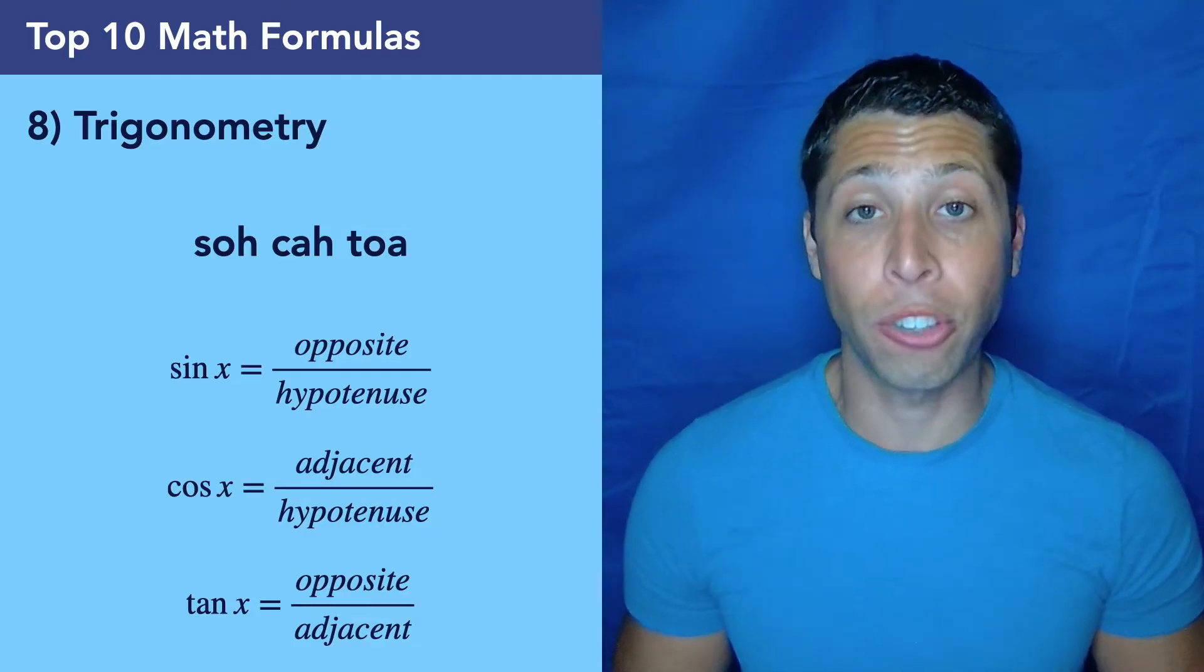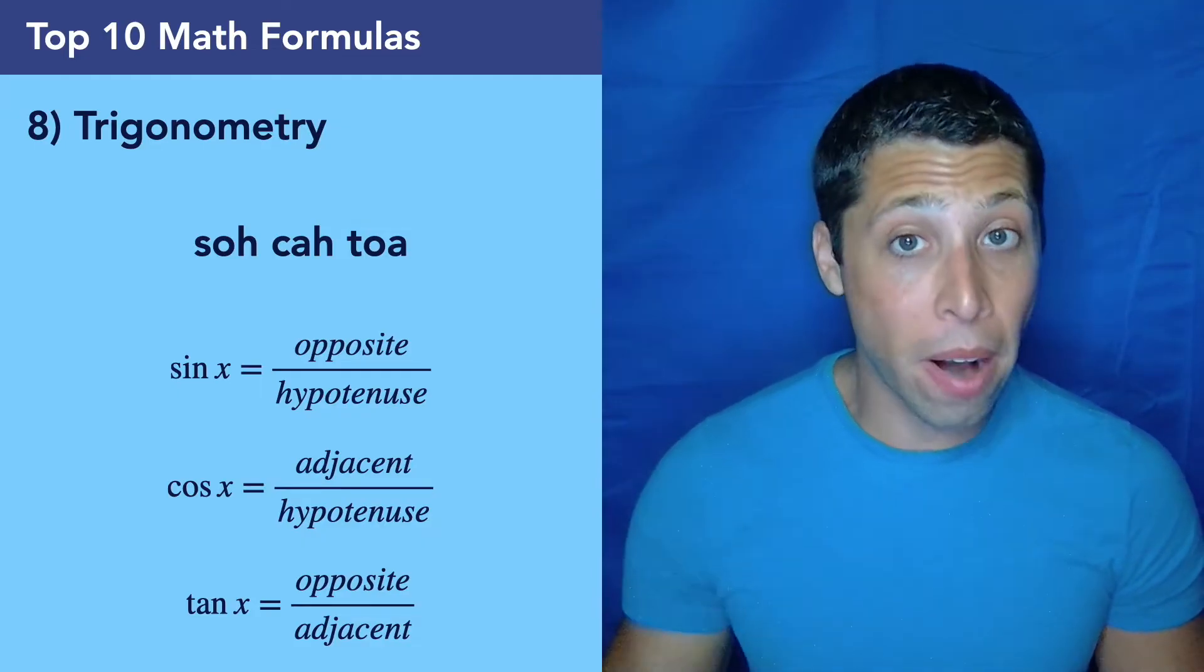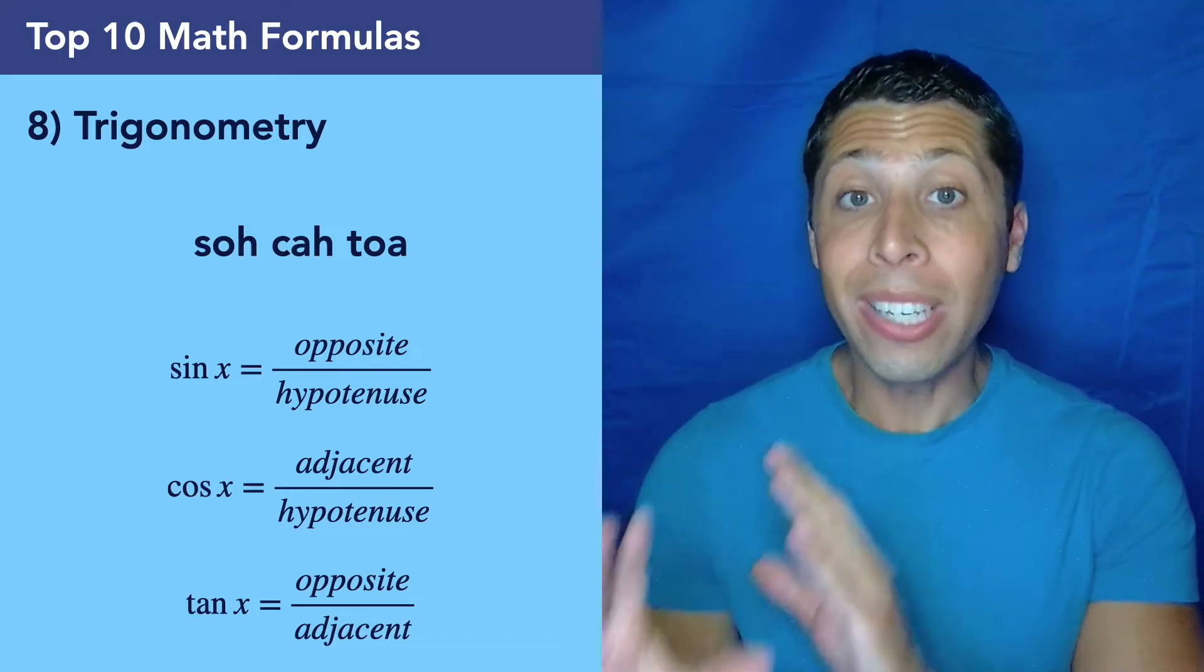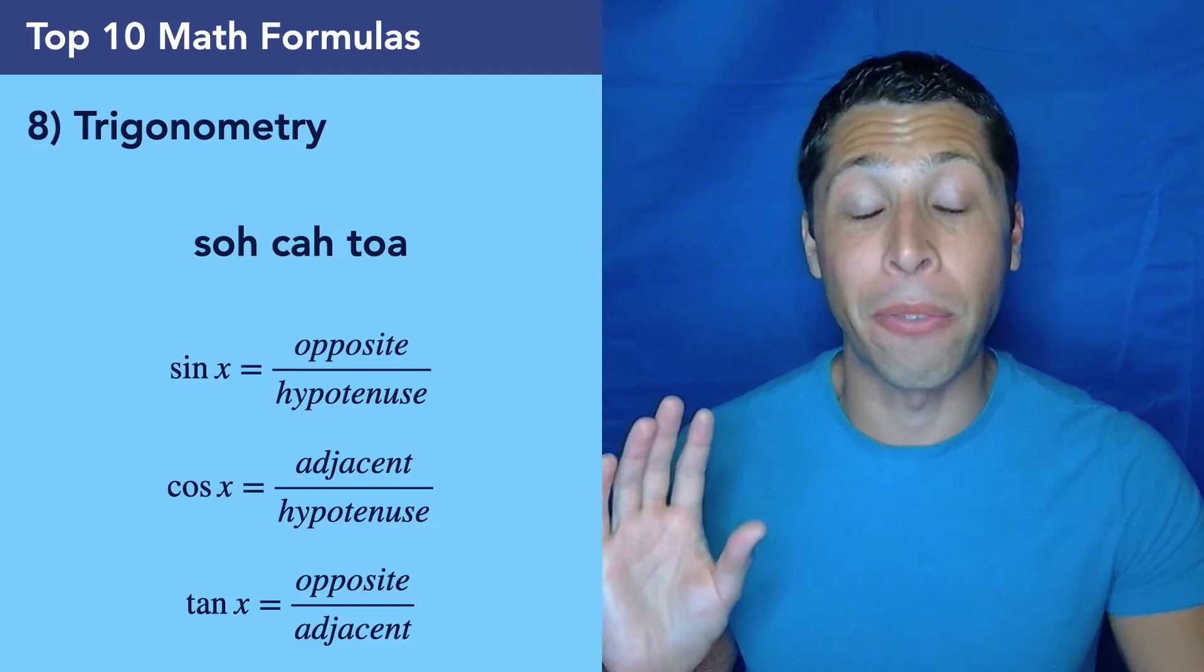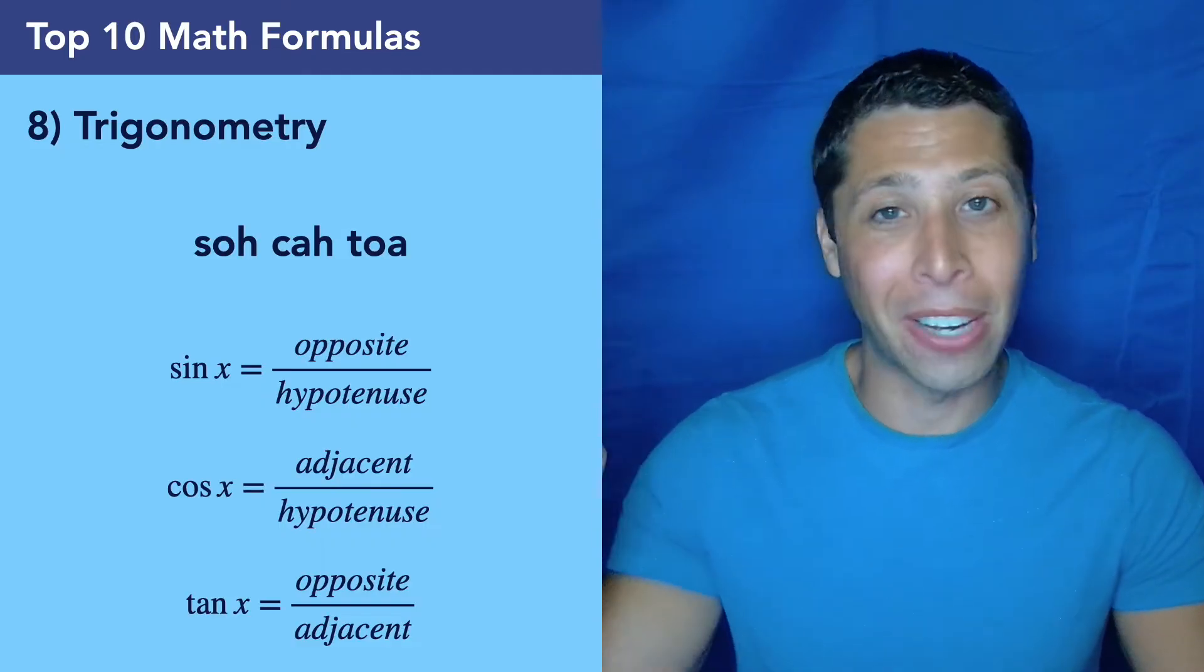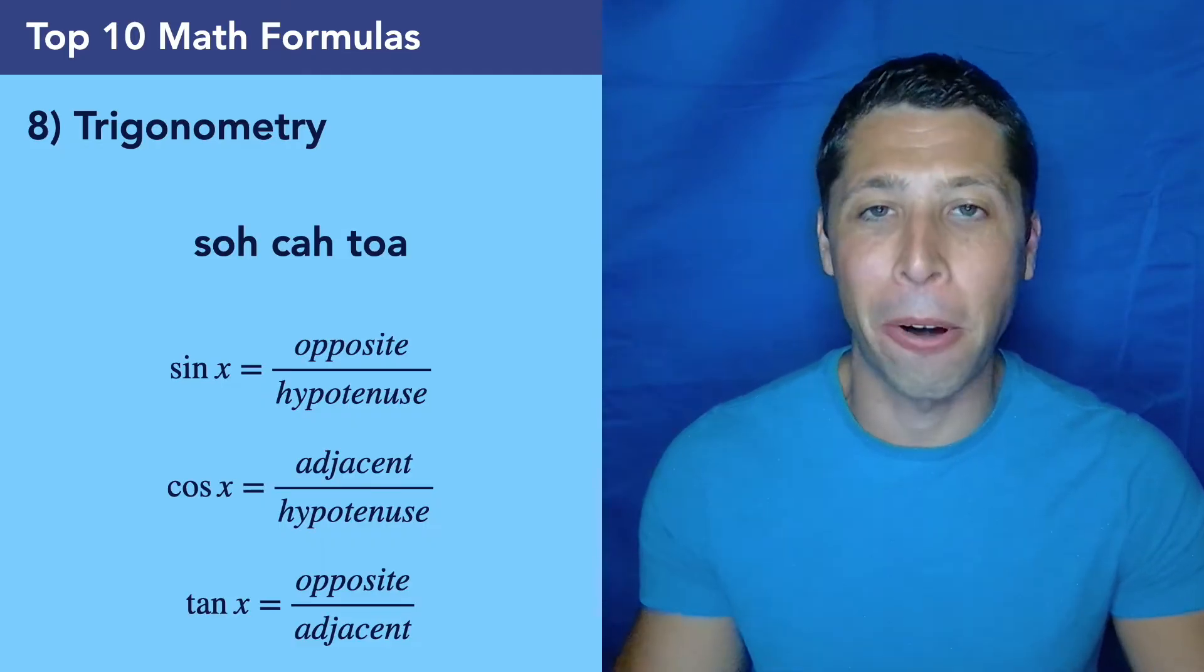But if you see a trigonometry question on the SAT, the odds are very, very good that all you need to know is SOHCAHTOA. So make sure you've got that memorized. In fact, it would be the first thing that I would write on my page if I saw sine, cosine, or tangent in any part of a question.